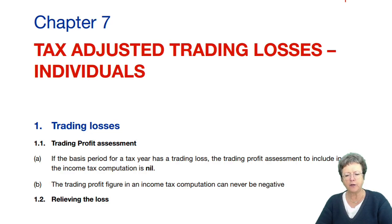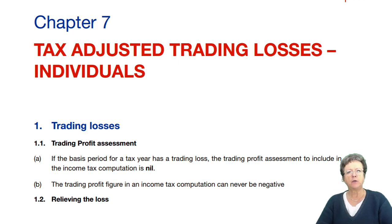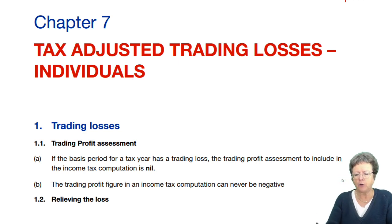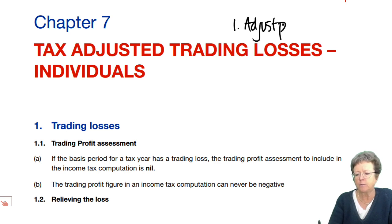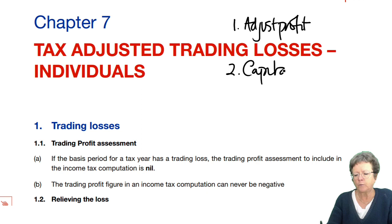In this chapter, we're going to look at tax-adjusted trade losses for individuals. A loss can appear at any point in your calculations. So far, we've looked at: firstly, we would adjust profits; second, we would do capital allowances. So a loss could be in all sorts of places.